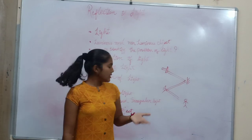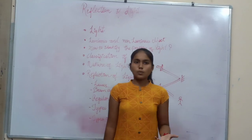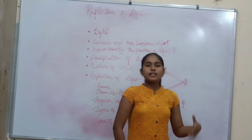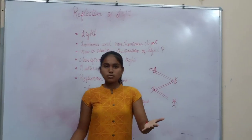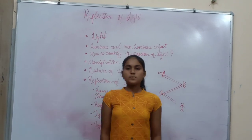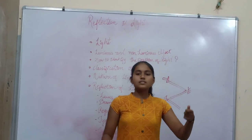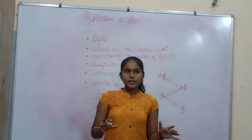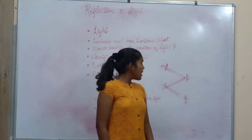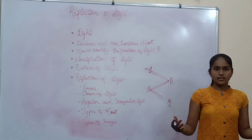Now the next is transparent. Transparent objects are those through which light can pass clearly. Examples are glass windows and similar things. The next is the translucent object — translucent objects are those through which light can pass but may not be clear; it may be blurred. Means partially the light is going to pass. Examples are rough plastic bottles or any other similar things.